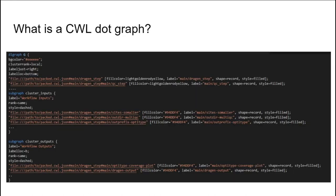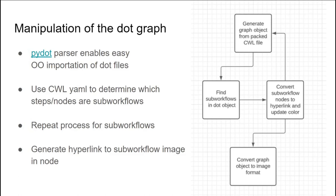Broken down, everything is much simpler than I thought. Like a CWL workflow, we have a set of inputs and outputs; everything else is the steps. The PI dot parser enables easy object-oriented importation of these dot files. We also read in the CWL workflow YAML file to determine if any of our step nodes are sub-workflows. We then repeat this process for the sub-workflow and generate a hyperlink to the sub-workflow graph image from inside the node, colouring it purple to indicate that it's a hyperlink and that more information lies underneath.